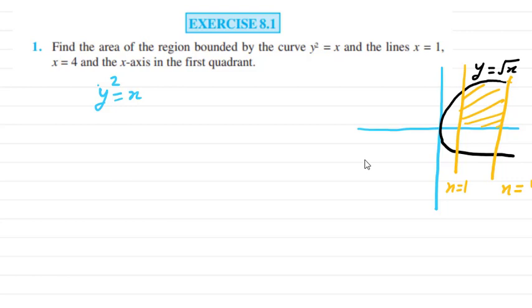Now what I'll do here is take a strip. This is dx, and at this point x is 1, and at this point x is 4. The area will be given by ∫y dx where the limits of x are from 1 to 4. Simply solve this